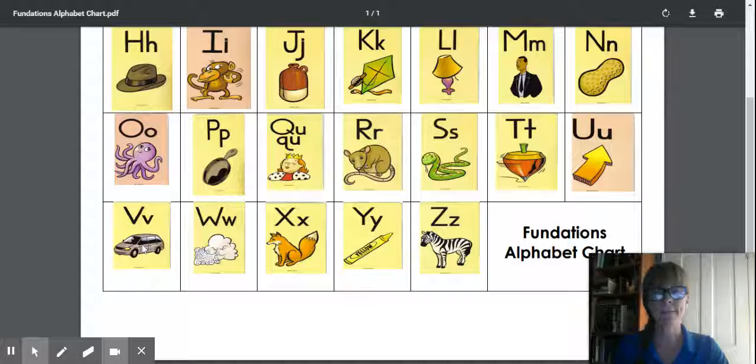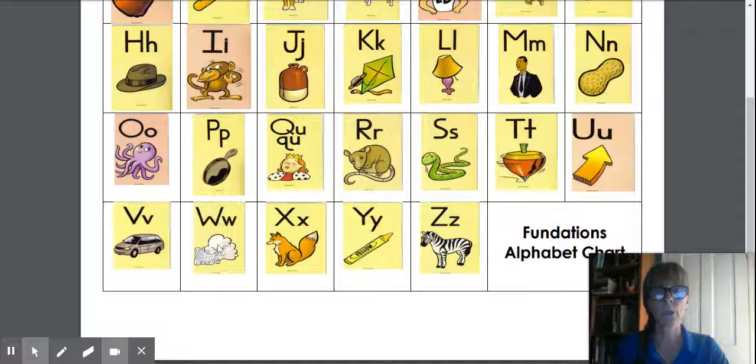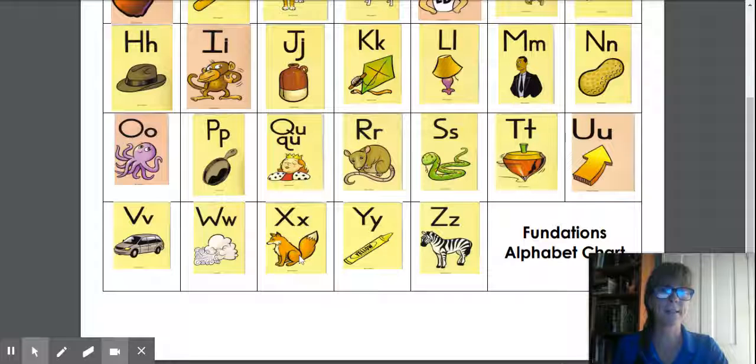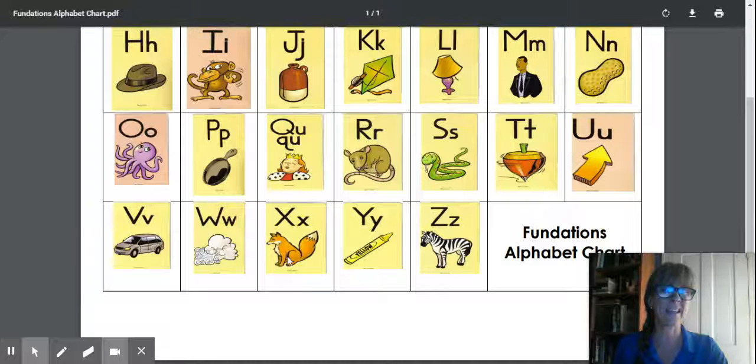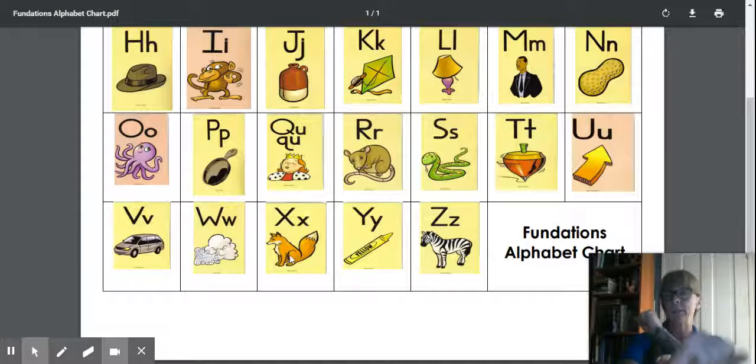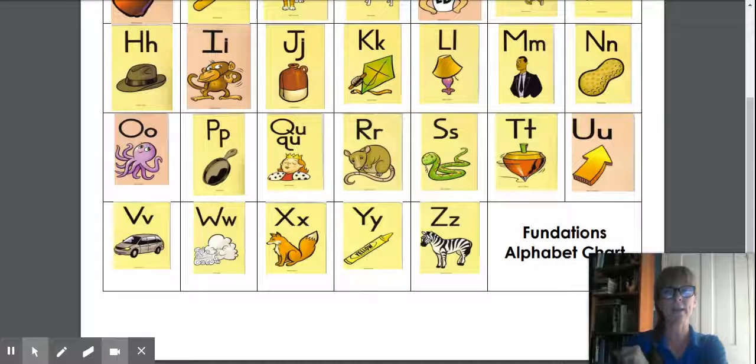V, Van, V. W, Wind, W. X, Fox, X. And Fox, the sound of X is at the end of fox, so we always go like this when we do it to make the X sound. So X, Fox, X.